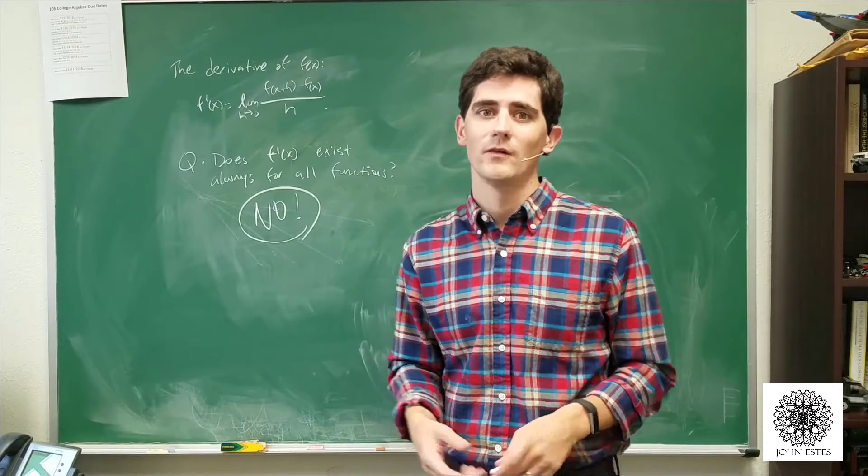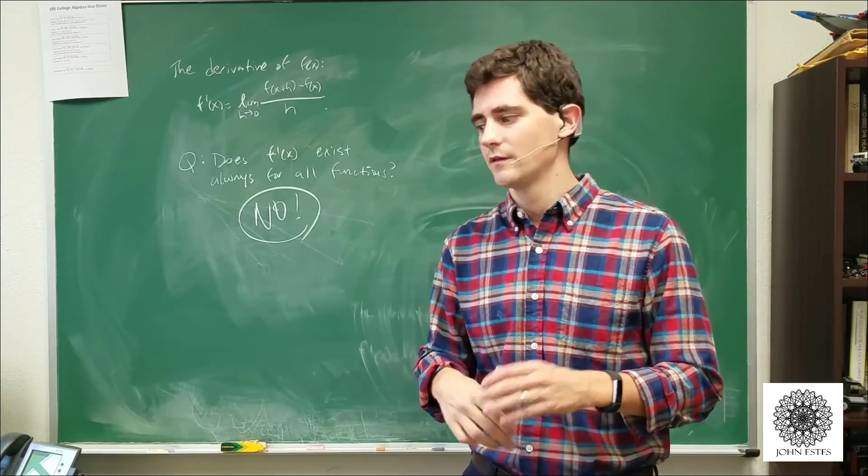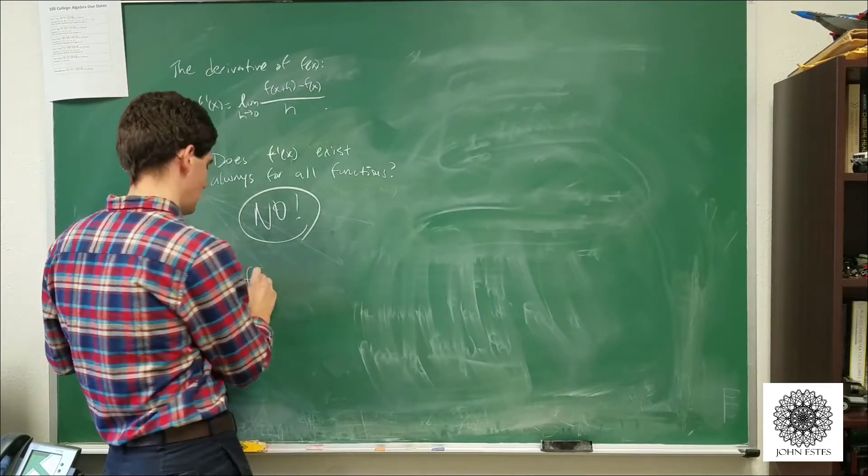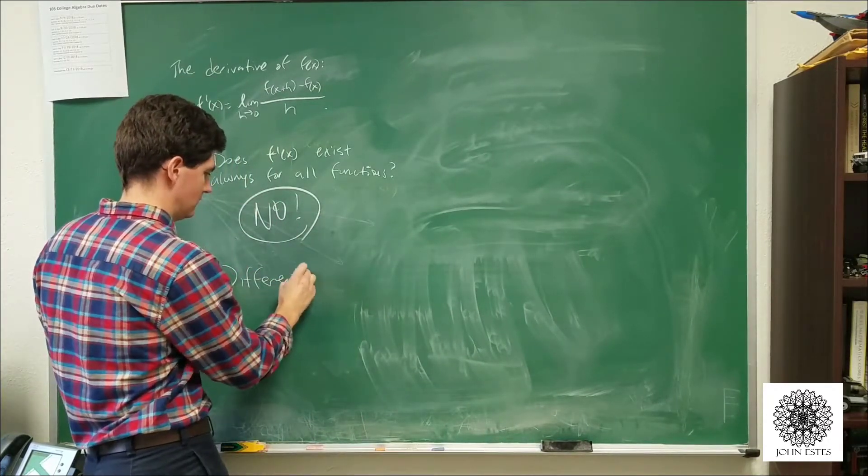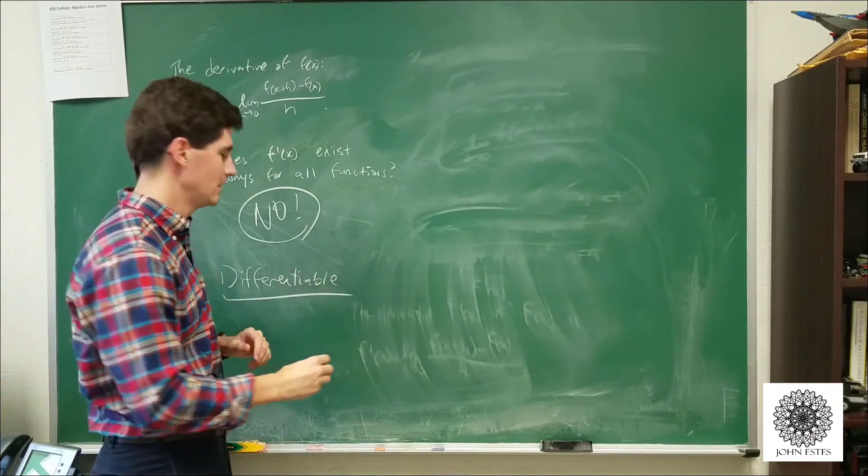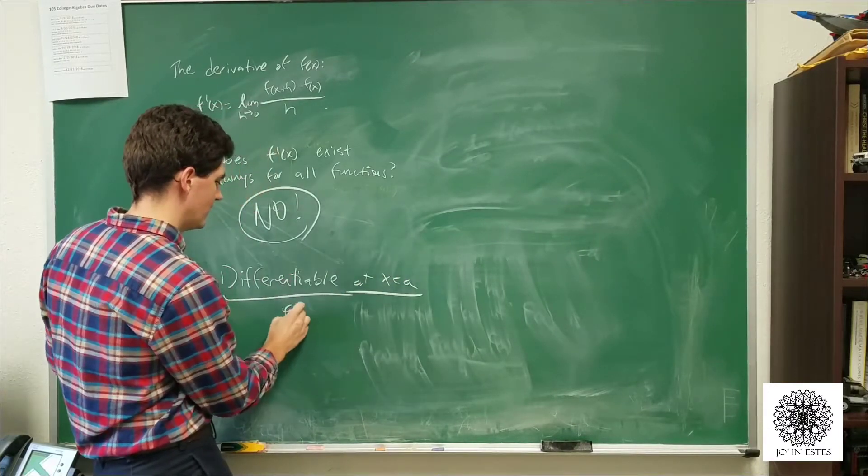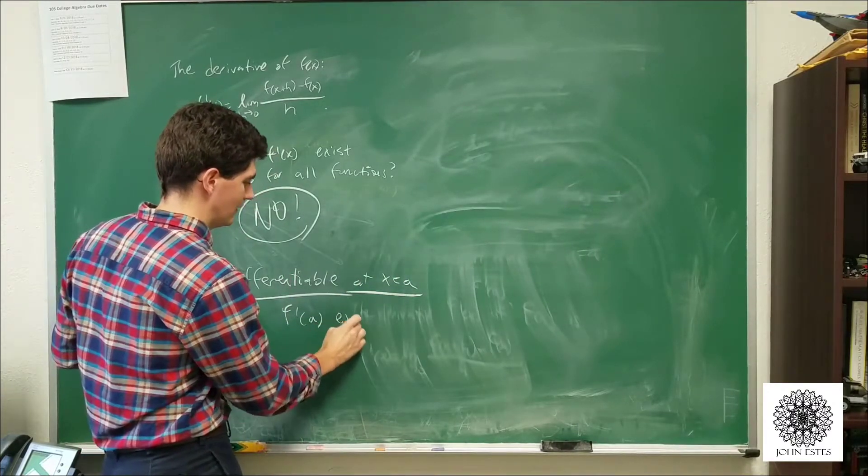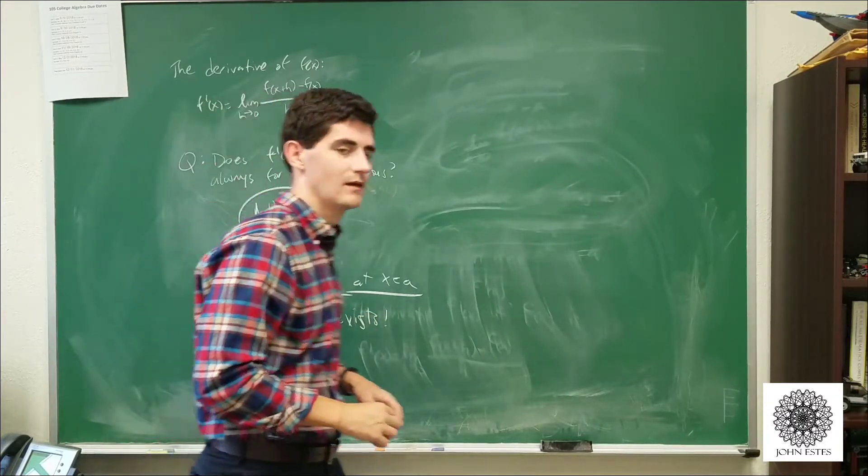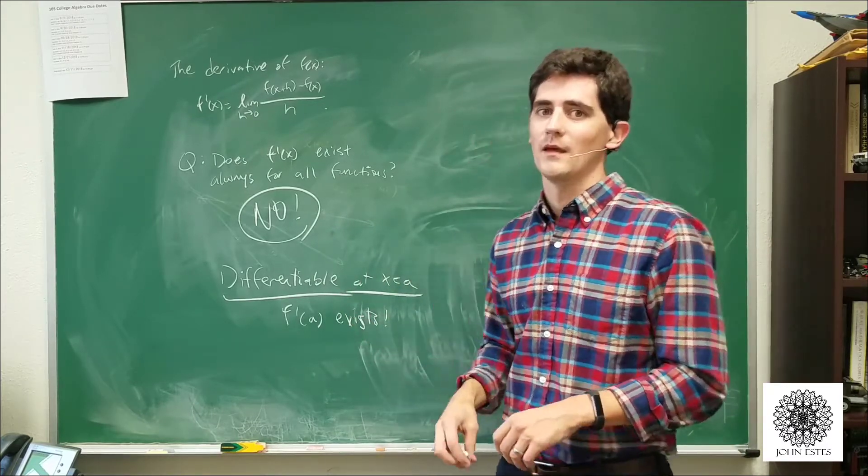So now that we've seen that the absolute value of x does not have a derivative at 0, it's worth mentioning a certain term. If I say a function is differentiable, so differentiable at x equals a means that f prime of a exists. That's all we mean. If it's differentiable at x equals a, then f prime of a exists.